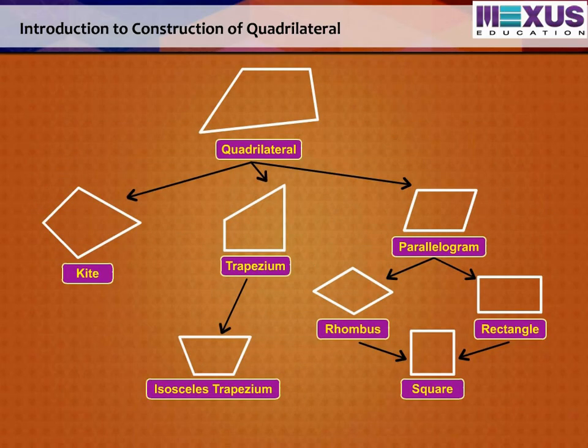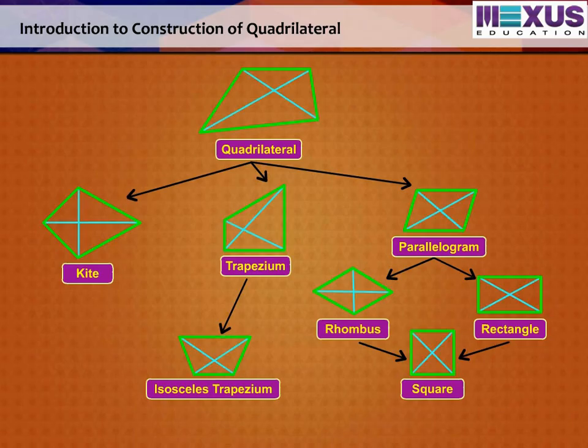As different quadrilaterals can be identified on the basis of their properties of sides, diagonals, and angles, quadrilaterals are made up of ten parts. However, to construct them, we do not need to know the measurement of all of them.